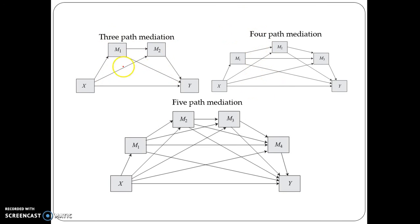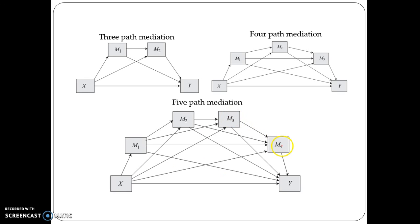Again, the same three-path mediation model. This one is a four-path mediation model. Here you have X and Y as antecedent and outcome. In between X and Y you have mediators M1, M2, and M3, giving totally four paths. This particular model is called the four-path mediation model. There is also an extension — the five-path mediation model — where between X and Y you have mediators M1, M2, M3, and M4, giving totally five paths.